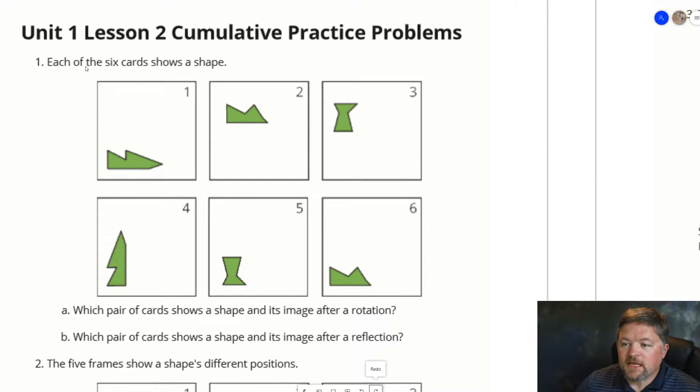Our first problem says each of the six cards shows a shape. Part A is which pair of cards shows a shape and its image after a rotation. So, a rotation. Well, 1 and 2 are not really the same shape. This one's long, this one's kind of squished. 3 is way different.